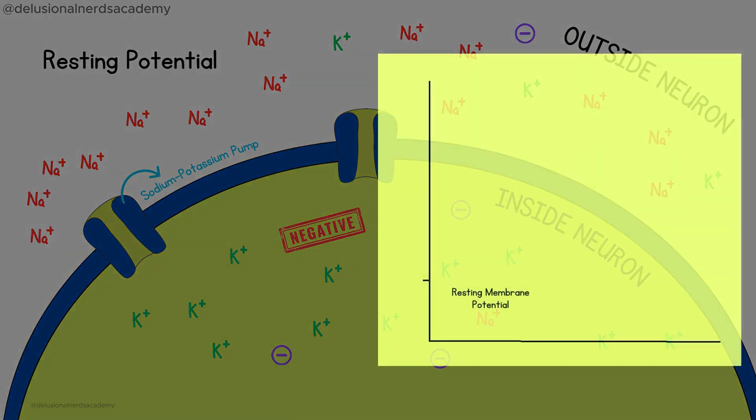This difference in charge is called a resting potential, which is usually about negative 70 millivolts.